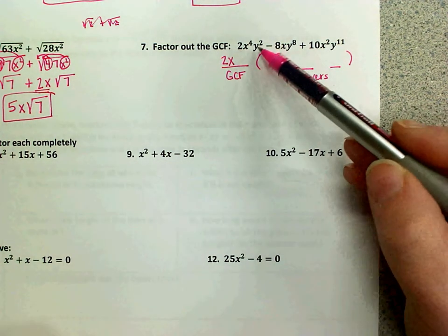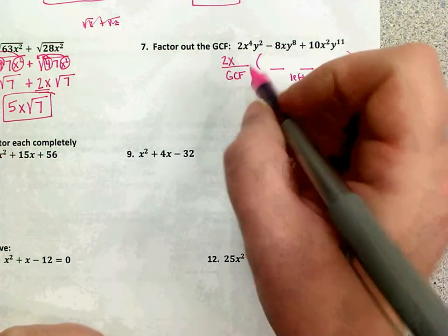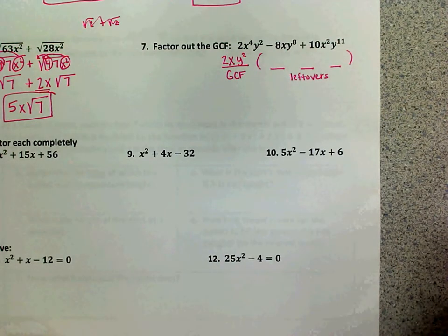With my y's, I have two, I have eight, I have eleven. Can't be more than the smallest because then it wouldn't be a factor of the smallest. So y to the second is my GCF of the y's.